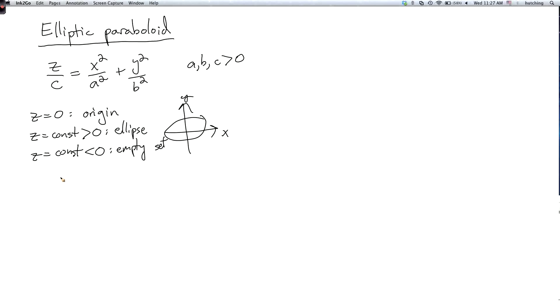We could also set y equals zero to find the intersection with the xz plane. So if we ignore the y term we have z over c equals x squared over a squared and that's a parabola that looks like this.